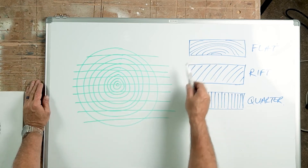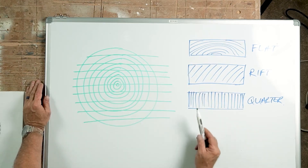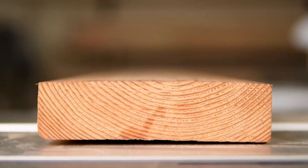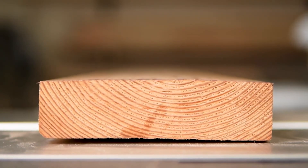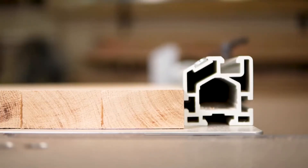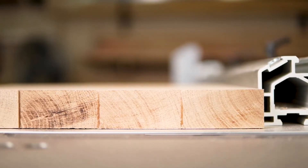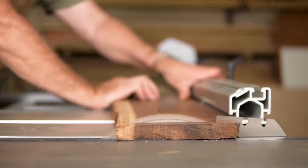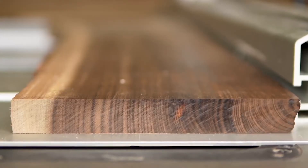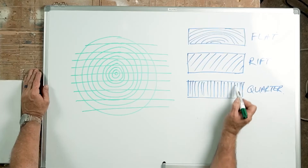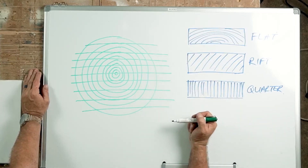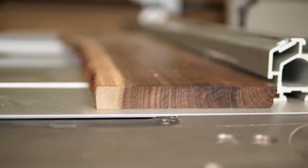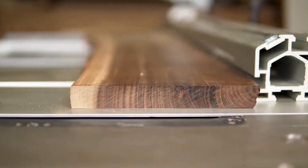The three major categories of how stuff is sawn are flat sawn, where your grain or circles go like that; rift sawn, where your grain is more of a 45-degree angle; and quarter sawn, where the grain runs perpendicular to the cut. Good, better, best is the easiest way to remember this — quarter sawn is first price, the most stable because it moves the least.